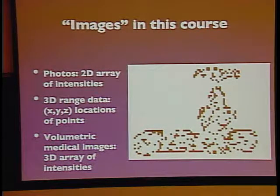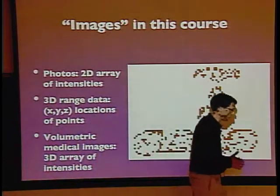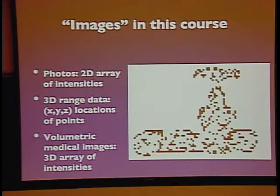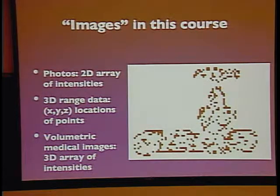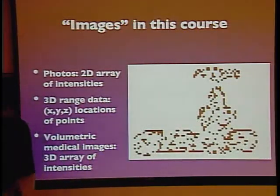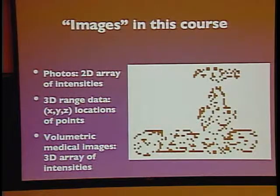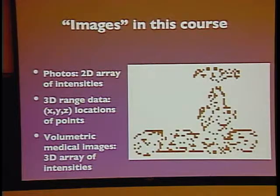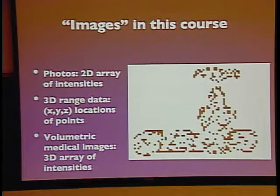The second three weeks of the course will deal with 3D range data — a set of points in three dimensions connected to each other by edges to form surfaces. There are numerous devices, including sonar and radar, that collect this kind of data automatically. For people interested in computer graphics and games, this is really the relevant part of the course, because these kinds of techniques are big in building models of characters and scenes from real data and animating them.